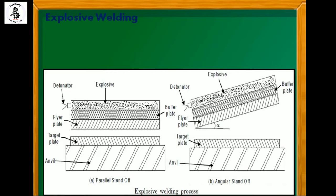By the detonator, the explosive is burned and with the acceleration applied onto the flyer plate, a joint is made onto the target plate. The other arrangement is similar but both the target plate and flyer plate have some angle — around four to five degrees. This is known as an angular standoff, where the flyer plate has an alpha angle with the target plate, with a buffer plate and explosive with detonator similarly arranged.